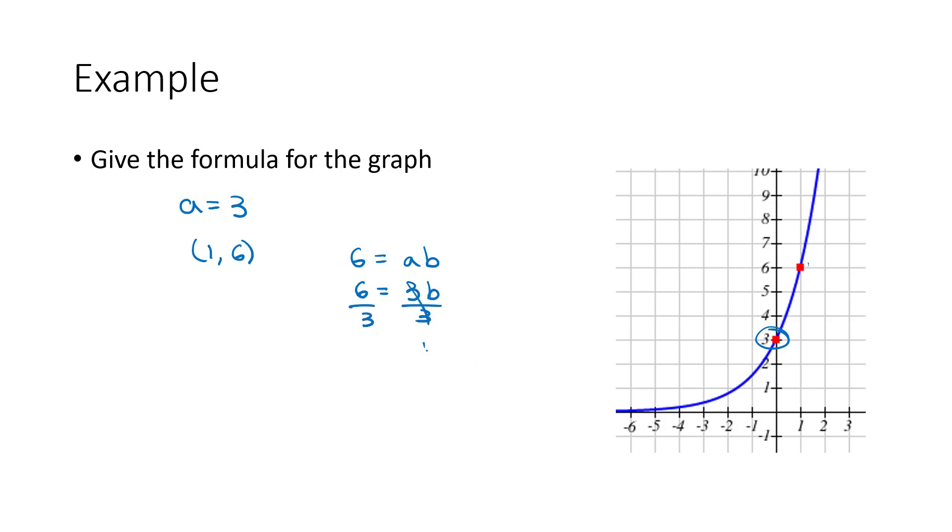Divide both sides by 3. And b is equal to 6 divided by 3 is 2. So we know a and we know b. F of x is a times b to the x. 3 times 2 to the x power.